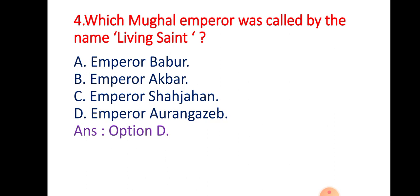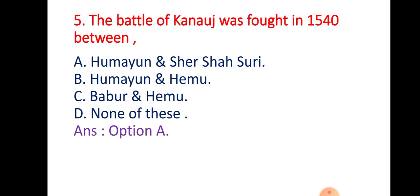Question 4: Which Mughal Emperor was called by the name 'Living Saint'? Option A: Emperor Babar. Option B: Emperor Akbar. Option C: Emperor Shahjahan. Option D: Emperor Aurangzeb. The right answer is Option D — Emperor Aurangzeb, the son of Emperor Shahjahan.